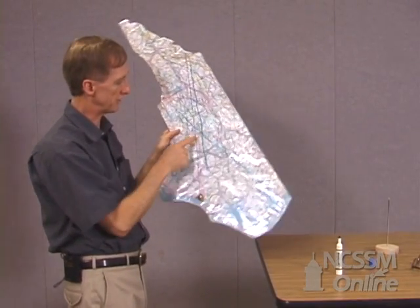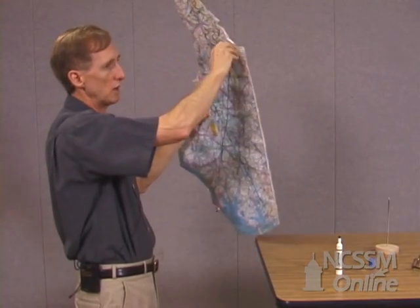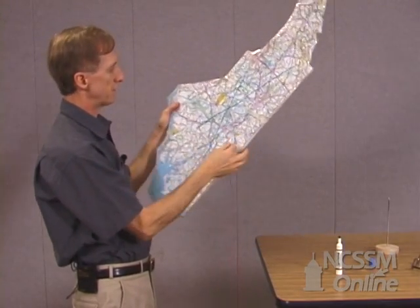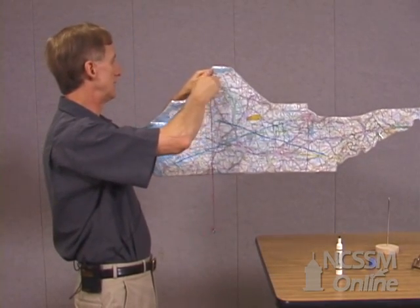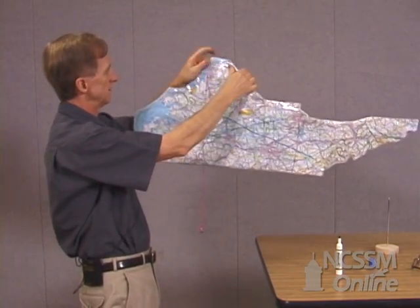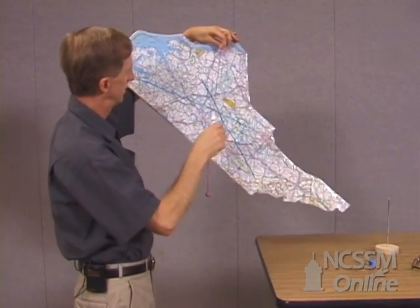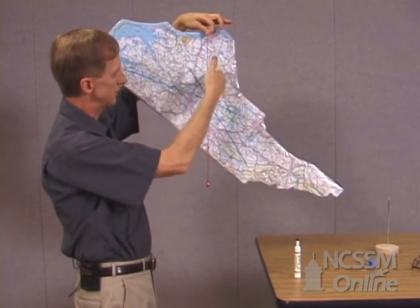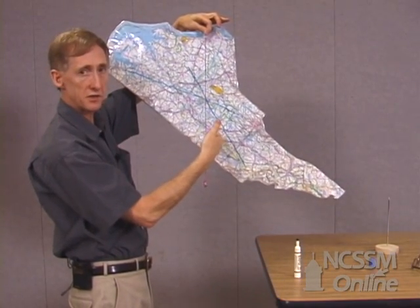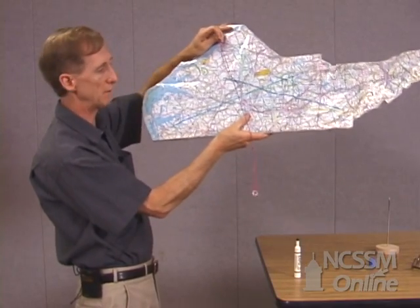That's enough to find the center of mass, which should be the intersection of those two. But just for good measure, we'll do it one more time to see if the third line also passes through that point. So I'll put this somewhere down around Wilmington. I don't have to draw the line for you to see that the string is passing very near that intersection point. So no matter where I put that pin, it should pass through that particular point.